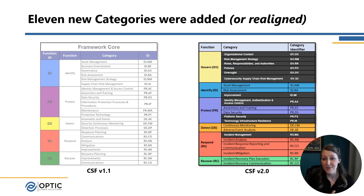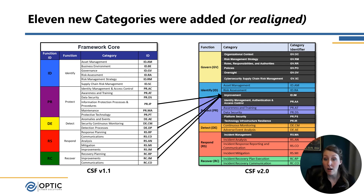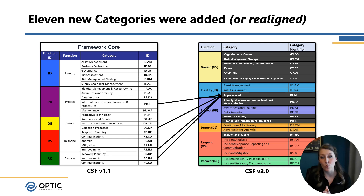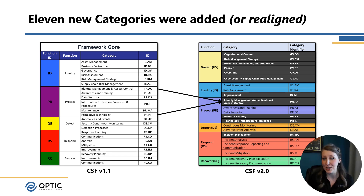Now I want to highlight the areas that were added — shown in dark gray on the right. There were 11 categories added, realigned, or renamed that are significant. The entire Govern function categories are new, of course. The new Improvement category consolidates previous improvement categories from Respond and Recover into Identify, also pulling in subcategories from information protection processes and procedures and detection processes — rolling all improvement activities into one place across all functions. Identity Management, Authentication and Access Control is largely the same as before but expanded, with authentication explicitly highlighted and some protective technology concepts incorporated.